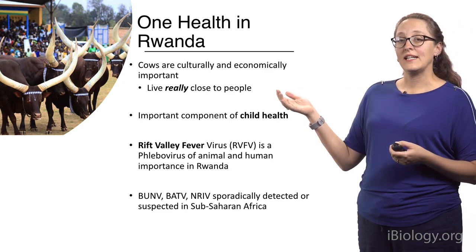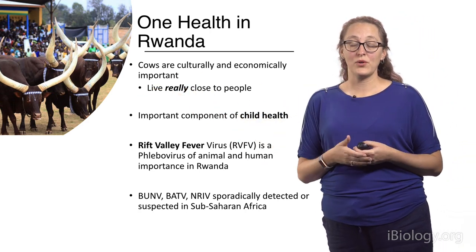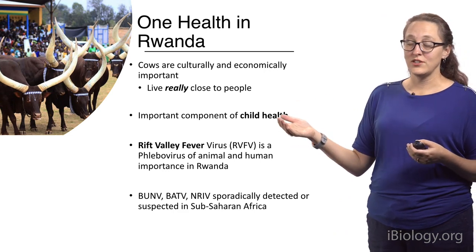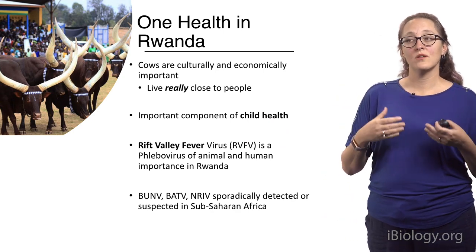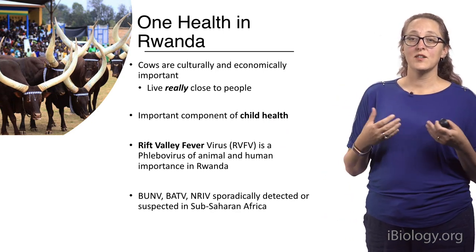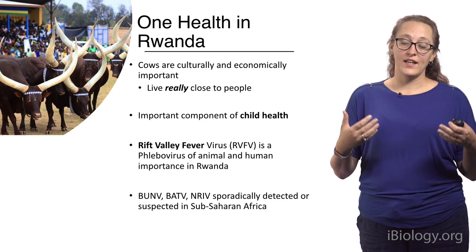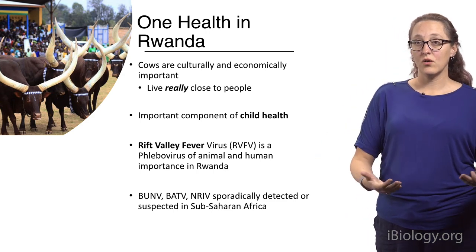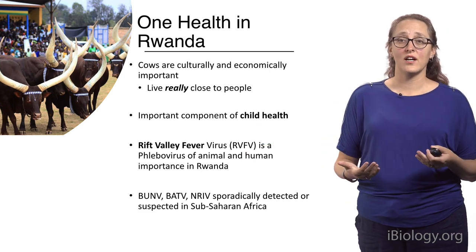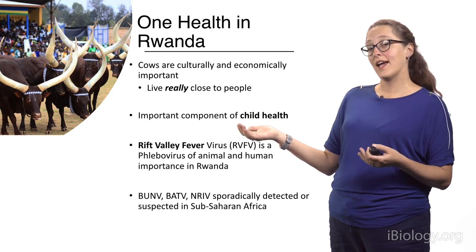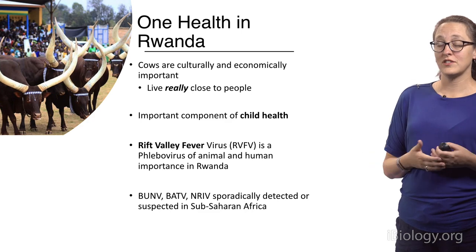Cows are culturally and economically important in Rwanda. These right here are some native cows to Rwanda, and they're beautiful. But they live really close to people — not just these, but a bunch of different types of cows. They're part of a program called One Cow Per Family, a program the government of Rwanda instituted to combat child growth stunting. They provided every family with a cow as a source of calcium and other vitamins for children.